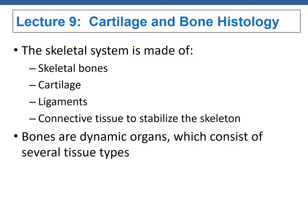This is lecture 9, Cartilage and Bone Histology. We're now moving into exam 2, and over the next 7 lectures we will discuss the skeletal system and articulations. This will be followed by a series of lectures on the muscular system. There is an intimate relationship between the skeletal system and the muscular system that provide multiple examples of co-evolved structure-function relationships. The skeletal system itself is made of bones, cartilage, ligaments, and connective tissue to stabilize the skeleton.